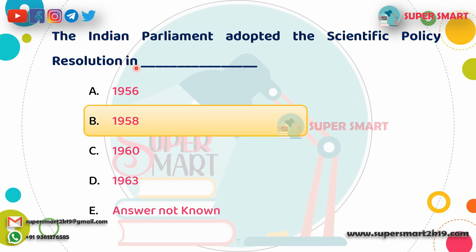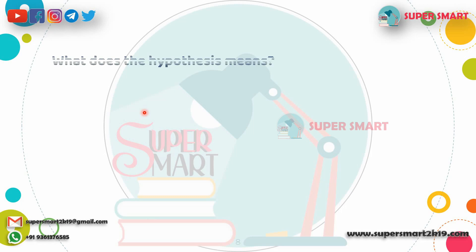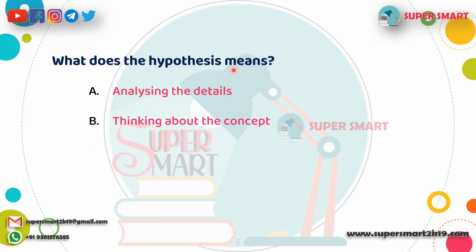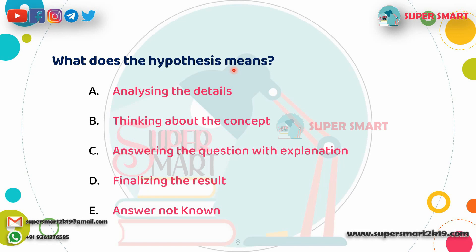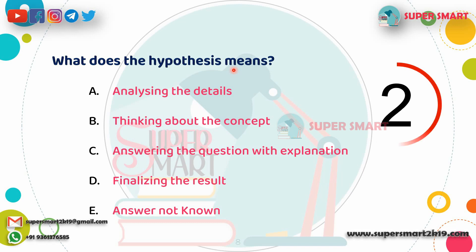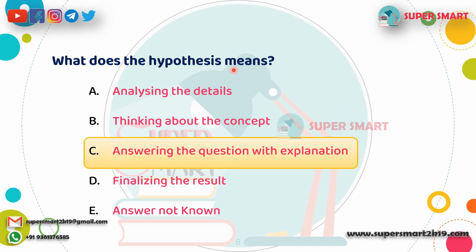Next question: What does hypothesis mean? If you look at the scientific method in the context of scientific knowledge and temper, the hypothesis is the explanation — it is used to predict outcomes. That is the hypothesis.